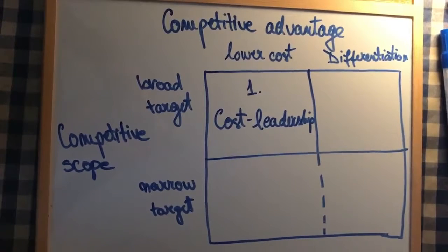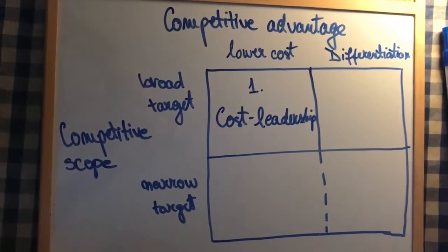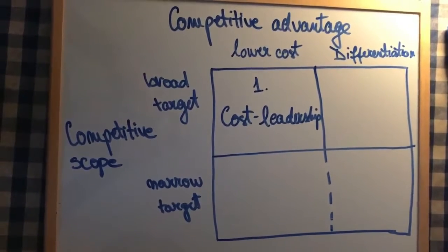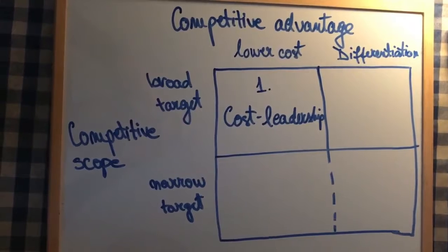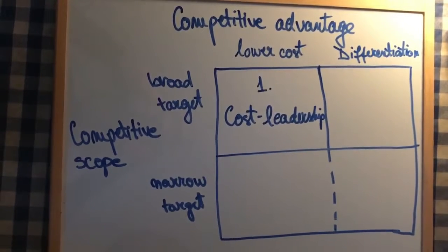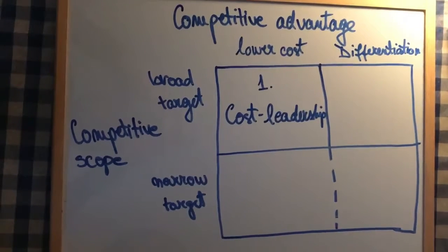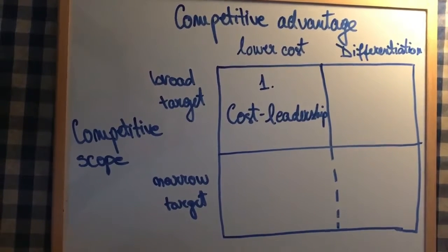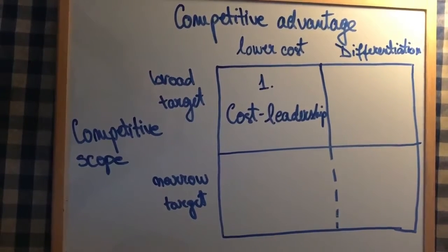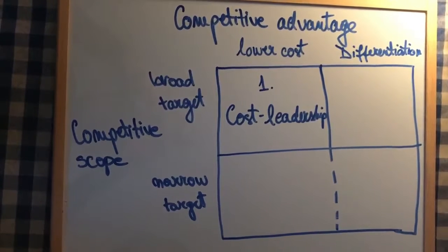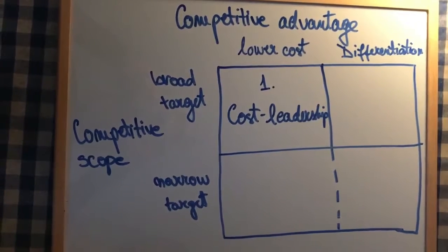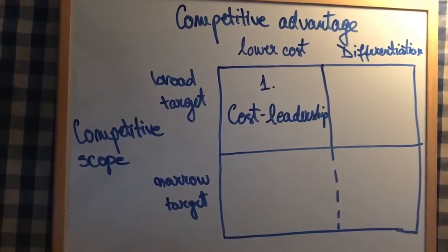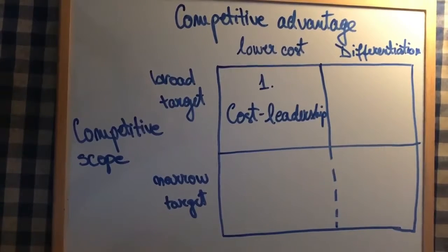There are two more key drivers: parity, which means equivalence, and proximity, which means closeness. Cost leadership really wants to be first, and therefore if you are first you are more secure than being second or third.